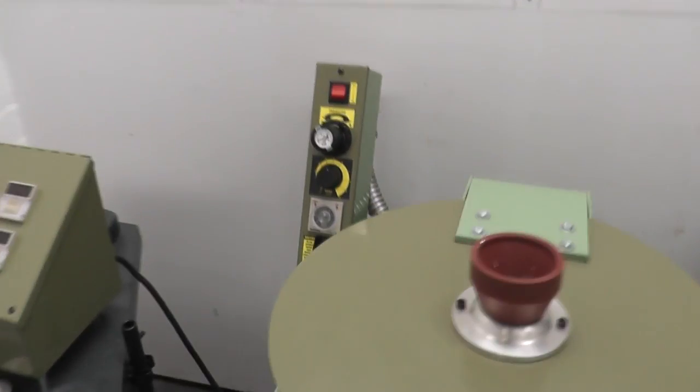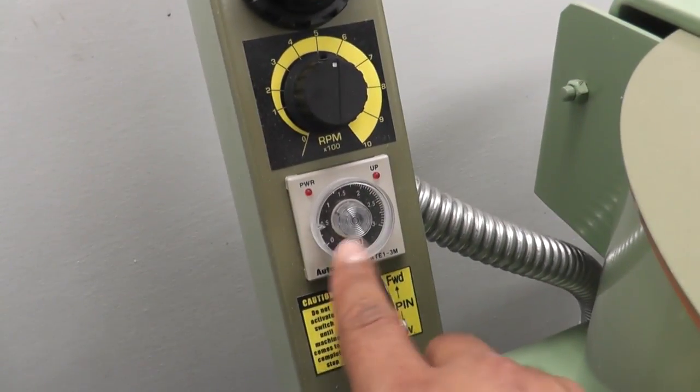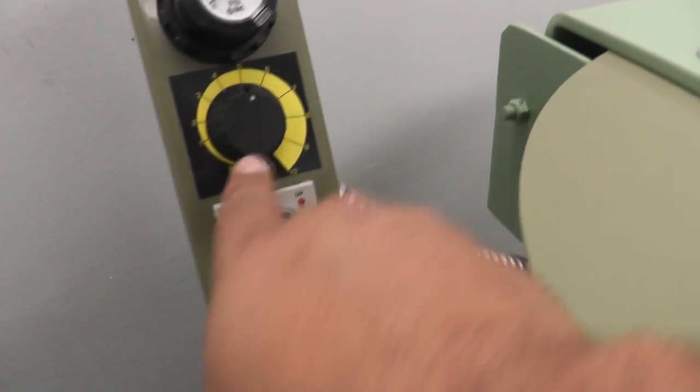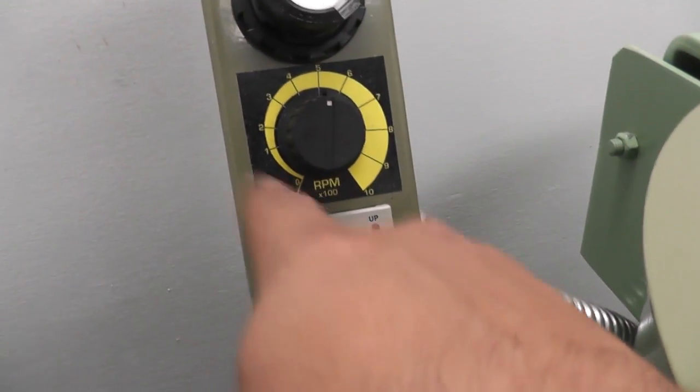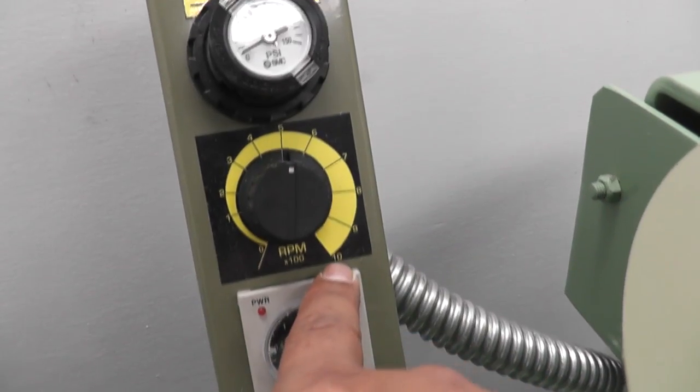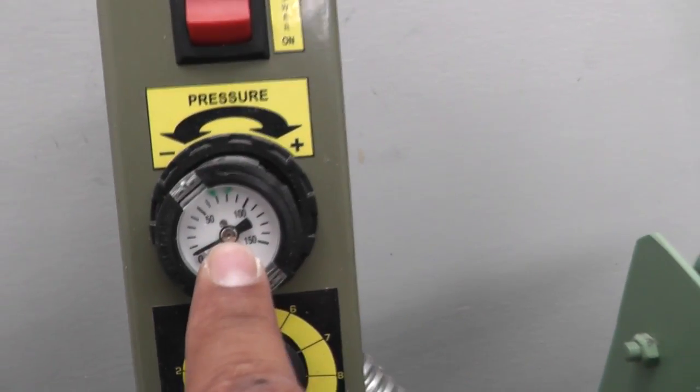So then the spin caster, this has several settings on it. How long the mold spins for, anywhere up to three minutes. The RPM, how many times it spins around, it goes from zero all the way around to 10,000 revolutions per minute and it's got the pressure.